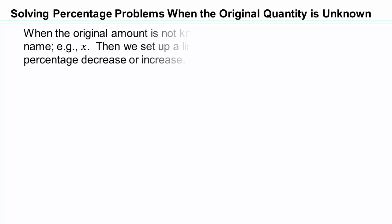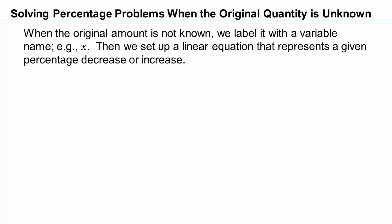Let's take a look at solving percentage problems when the original quantity is unknown. Let's start with some general strategies. When the original amount is unknown, we can label it with variables like x or t or p, whatever variable you would like to use. And then we set up the equations.